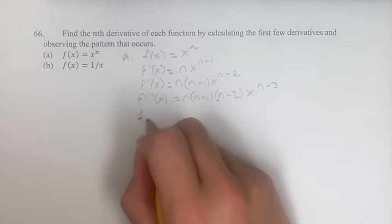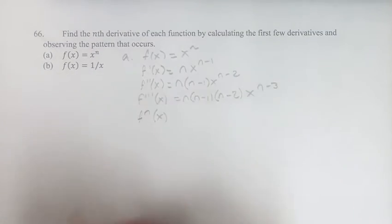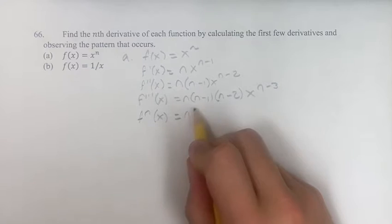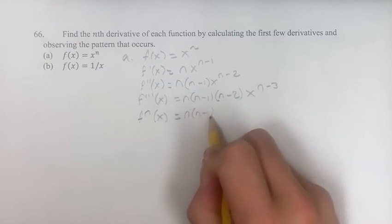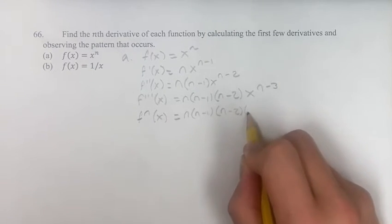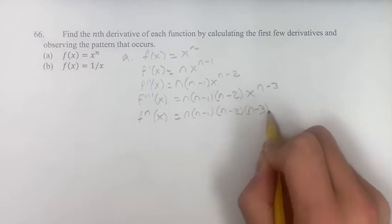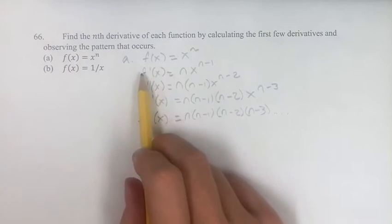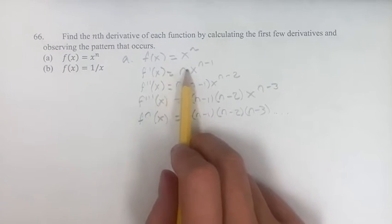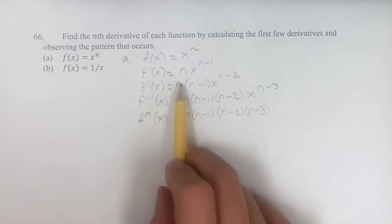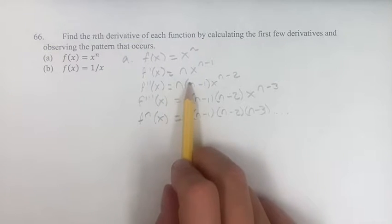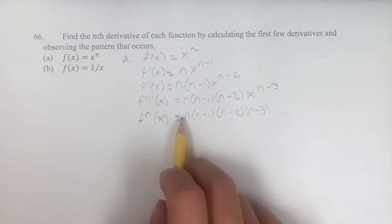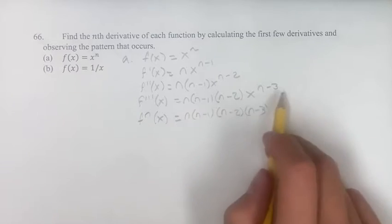So what would the nth derivative, f⁽ⁿ⁾(x), equal? Well, it would be n times (n minus 1) times (n minus 2) times (n minus 3) and so on. In the first derivative there's just one of these terms, in the second derivative there's 2, in the third derivative there's 3. So in the nth derivative there's going to be n of these.